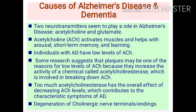Both Alzheimer's disease and dementia are characterized by severe memory loss. Two neurotransmitters play an important role: acetylcholine and glutamate. Acetylcholine activates muscles and helps with arousal, short-term memory, and learning. Individuals with Alzheimer's disease have a very low level of acetylcholine — this is a very important point.